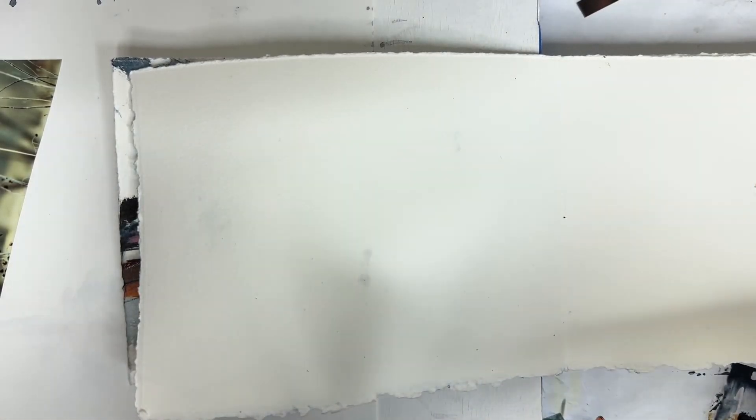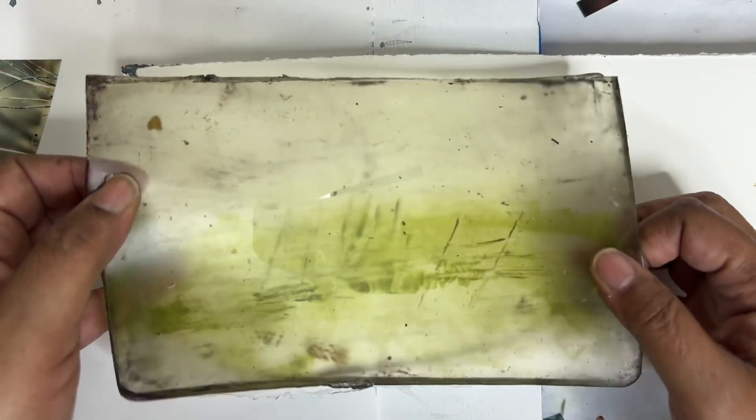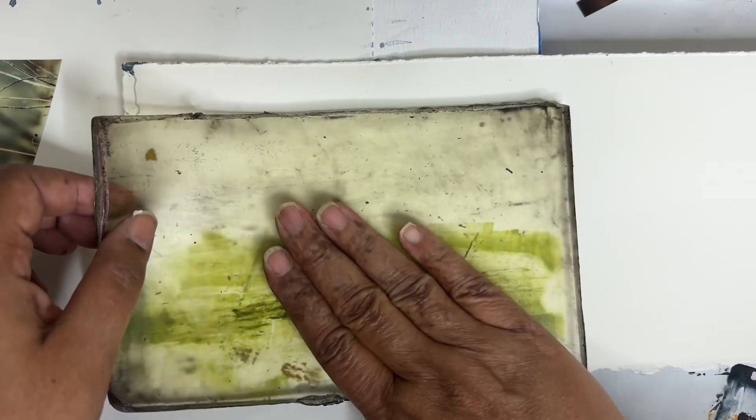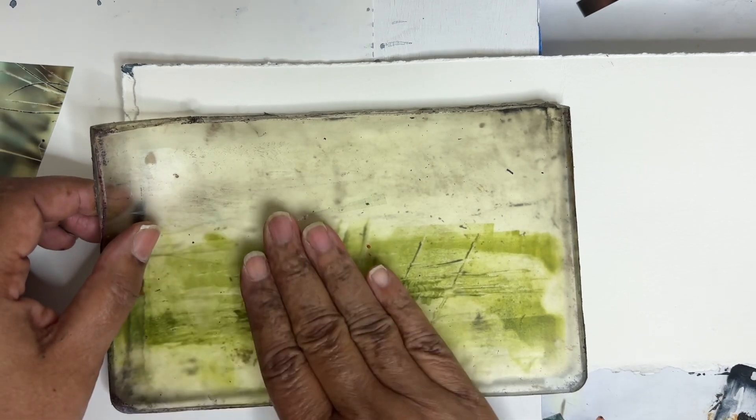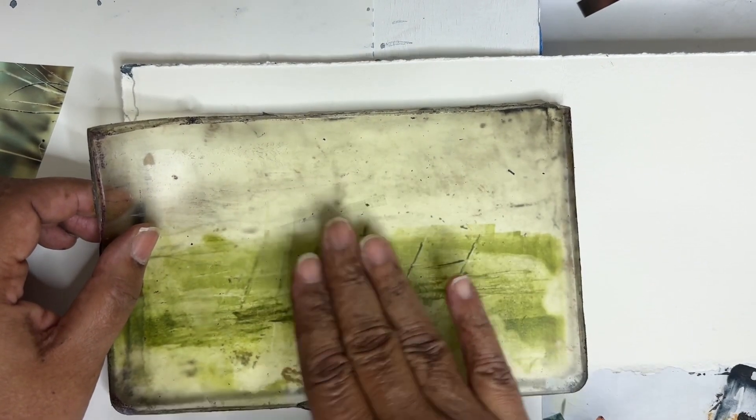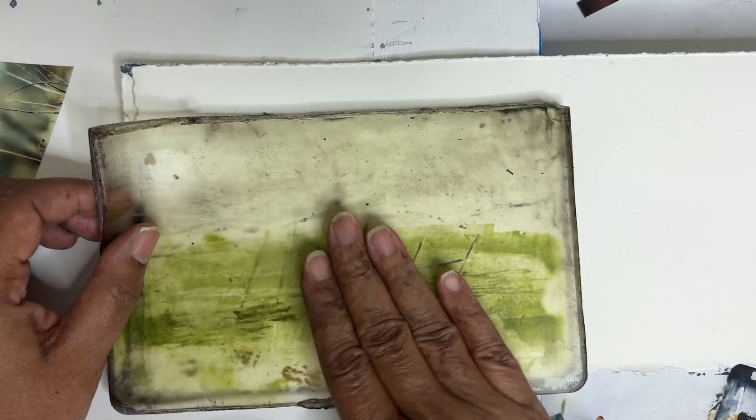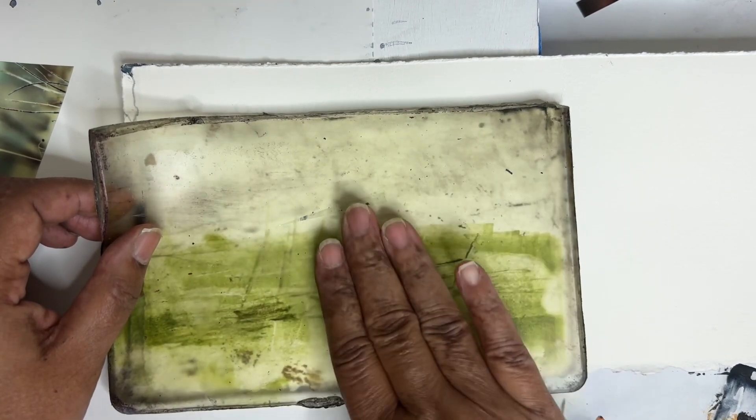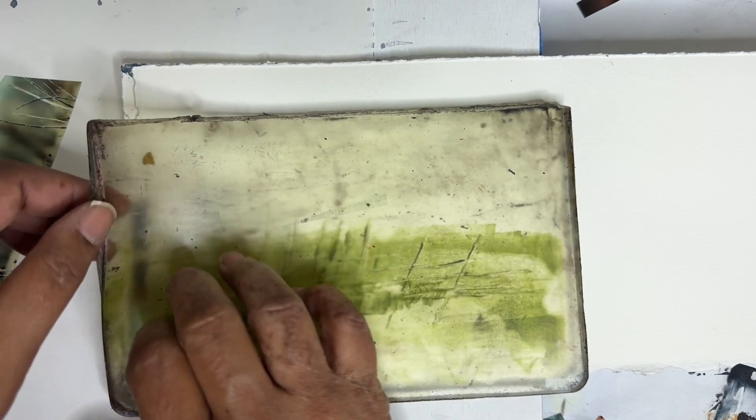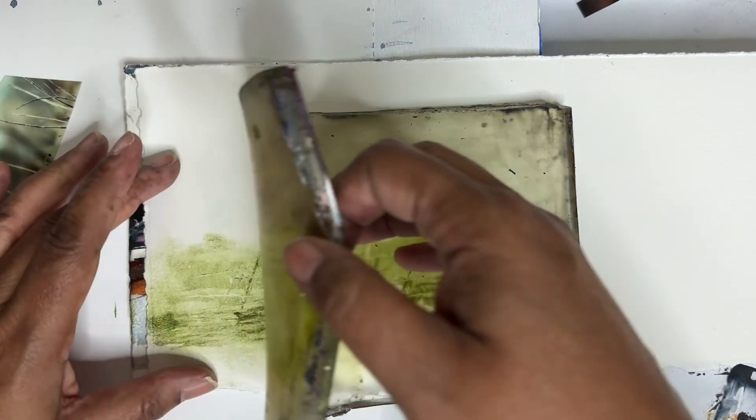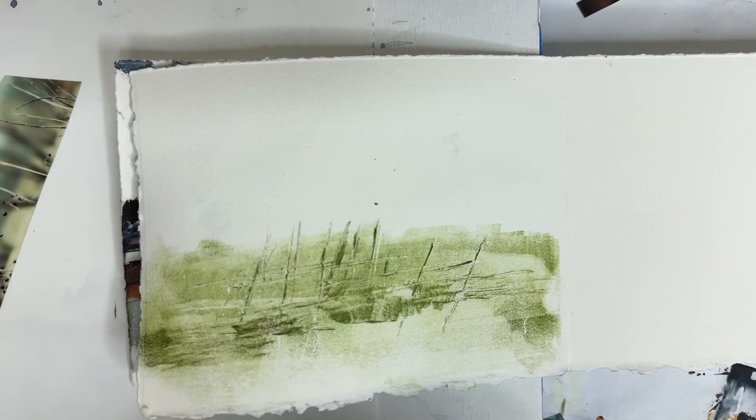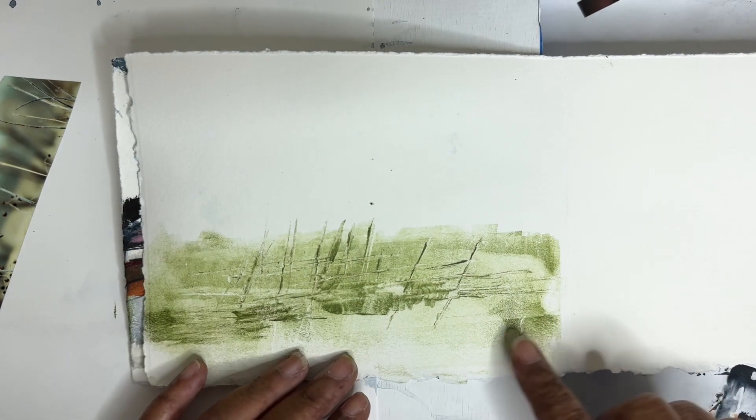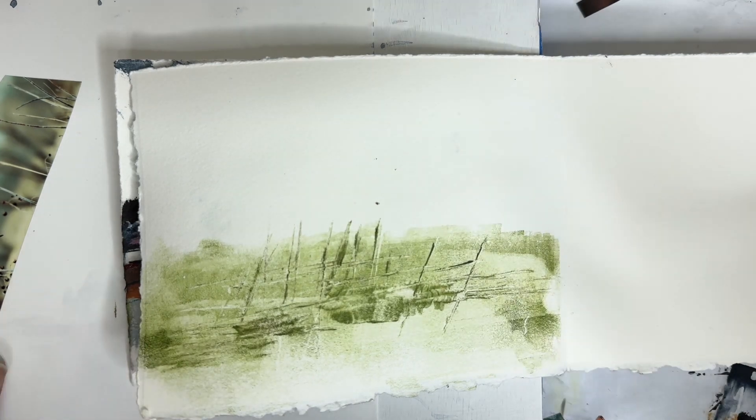Let's see what we get. I want this pretty much at the bottom. I'm using the golden open acrylics. These are pretty transparent colors, so we're gonna see how this works. Ooh, that's pretty. I like that. Let's let this dry for a bit, and then we'll try the transfer.